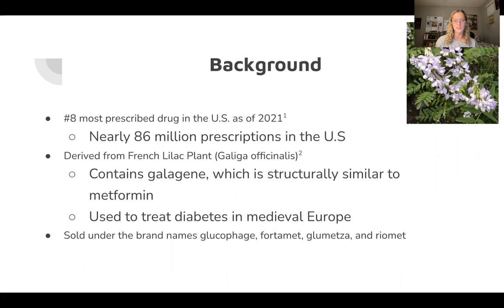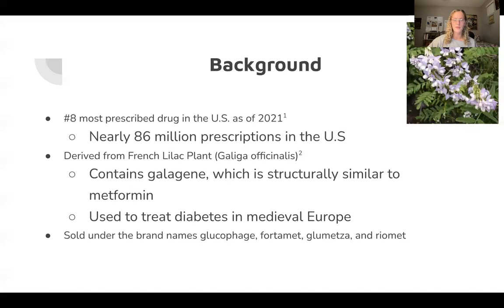Galagine, which is present in Goat's-Rue, or the French lilac plant, pictured here in the upper right-hand corner, was used in medieval Europe to treat this form of diabetes. But due to its toxicity, it's not really used anymore in its natural form.